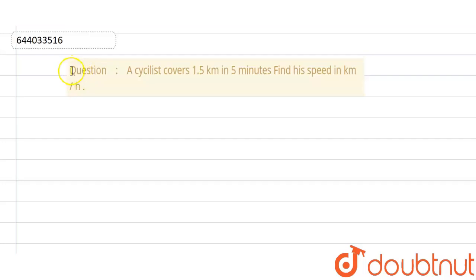Welcome to Doubtnet. The question given to us was: a cyclist covers 1.5 kilometers in 5 minutes. Find the speed in kilometers per hour.